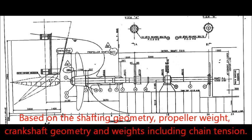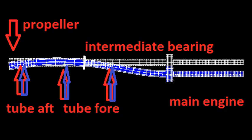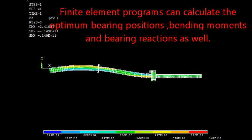Based on the shafting geometry, propeller weight, crankshaft geometry and weights including chain tension, finite element programs can calculate the optimum bearing positions, bending moments, and bearing reactions as well.